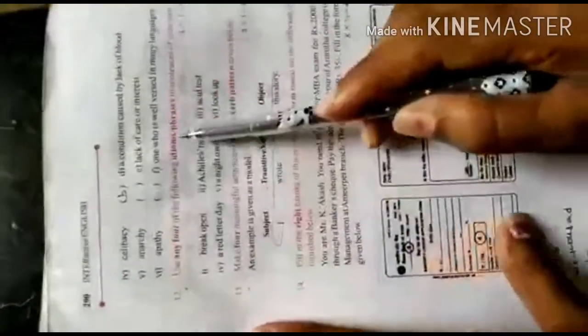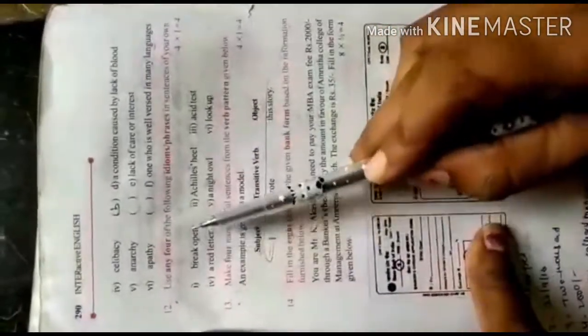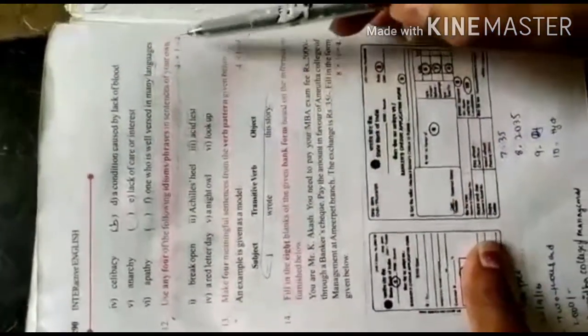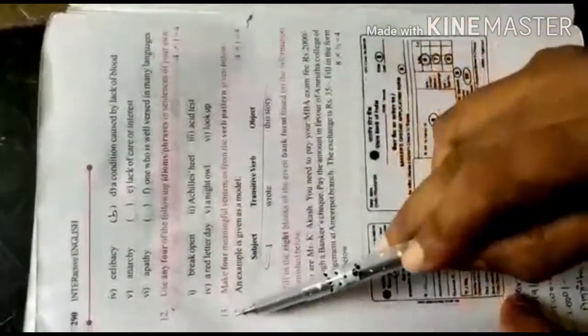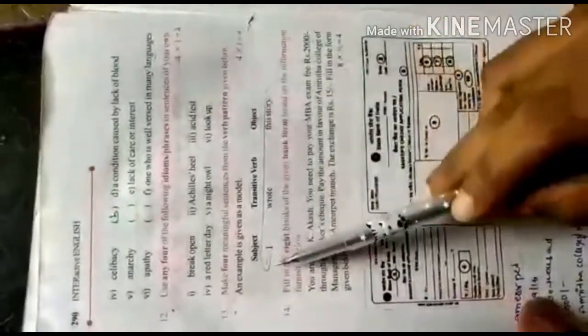Twelfth bit: idioms. There are six idioms - write the meaning of the idiom or use it in a sentence. Thirteenth bit: verb patterns. These are verb pattern questions with rules of context.